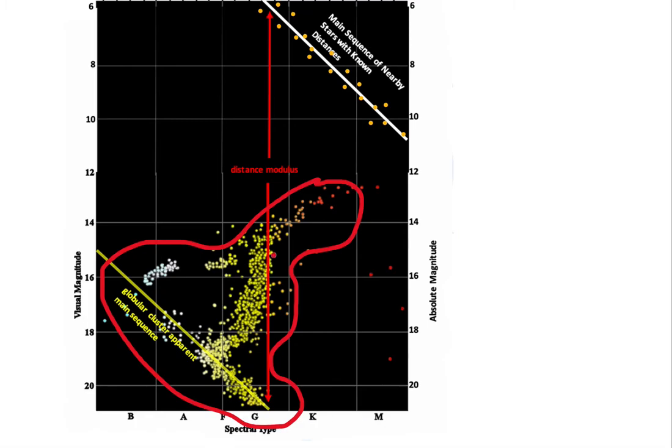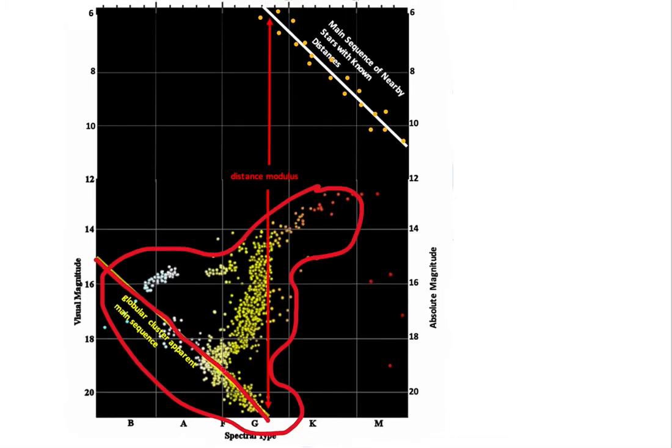After the stars are plotted, we find the apparent main sequence. It's not the true main sequence because we really don't know where these stars fit on this diagram. We just plot the pattern initially.